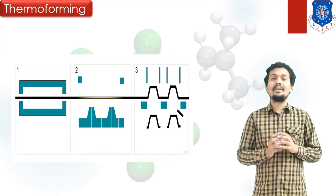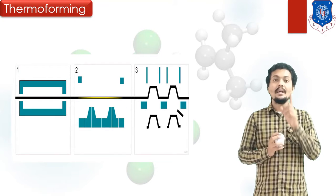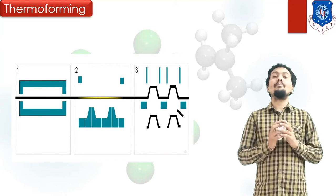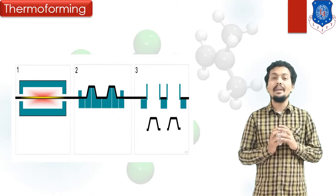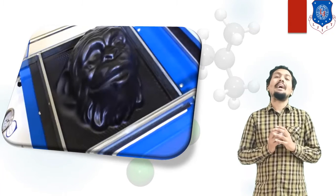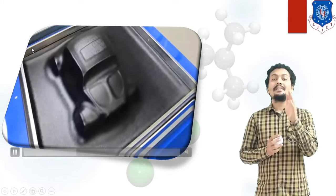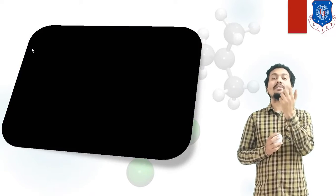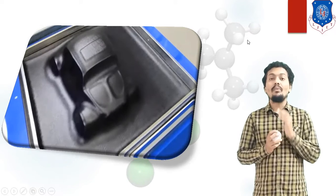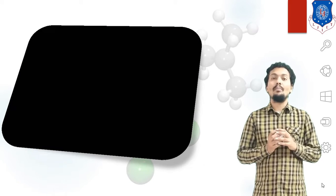We can easily understand the Thermoforming process from this view. This is a very important plastic molding process. As shown in the video, you can make components like a mask using Thermoforming — the plastic sheet is drawn with the help of pressure difference. In Thermoforming, pressure difference is very important; with this pressure difference, we can make any component or shape.